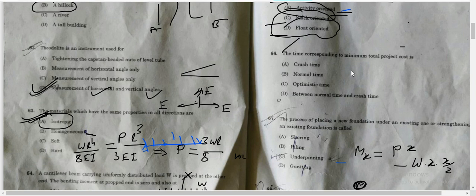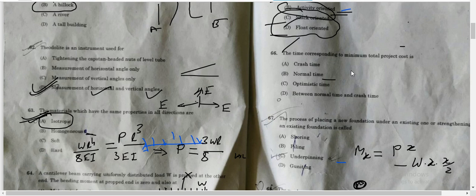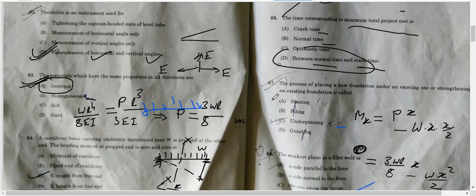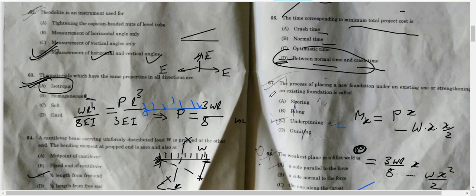Question number 66: The time corresponding to minimum total project cost. Normal time means the standard time associated with normal resource of the organization to perform the activity. Crash time is the minimum possible time in which activity can be completed by employing extra resources. The time corresponding to minimum total project cost is anything between normal time and crash time. So option D is the correct answer.